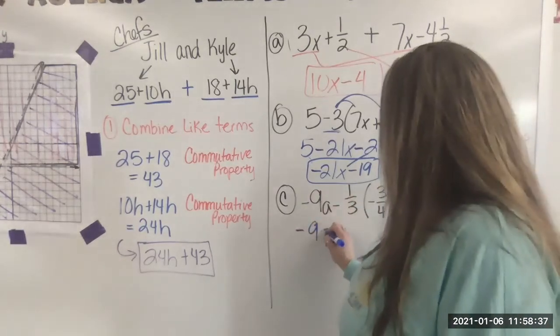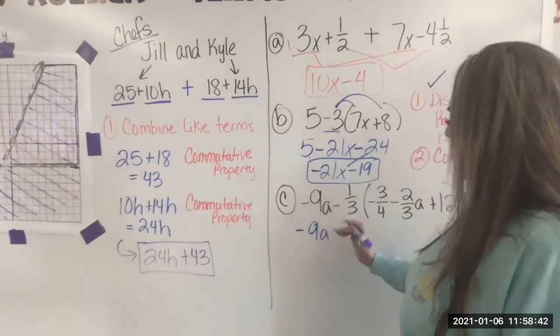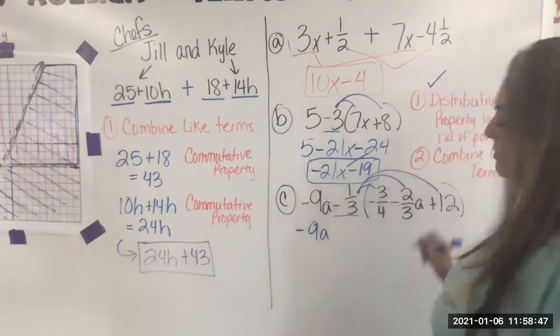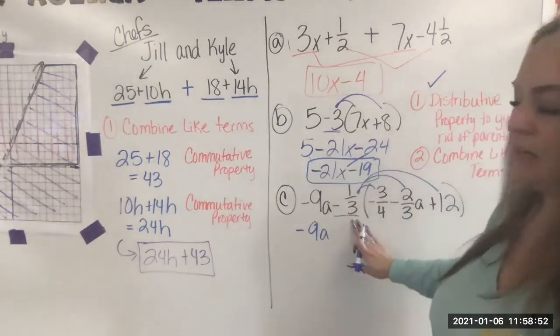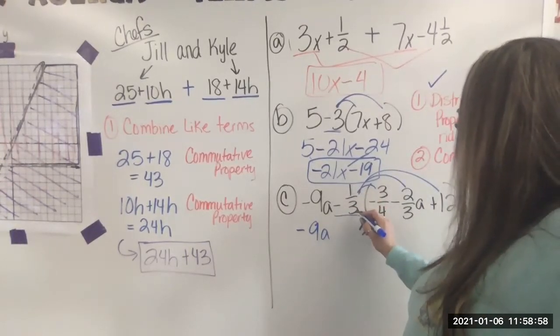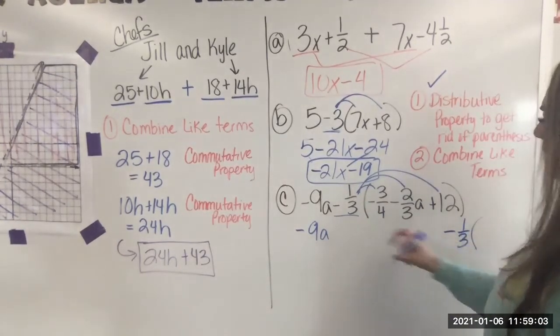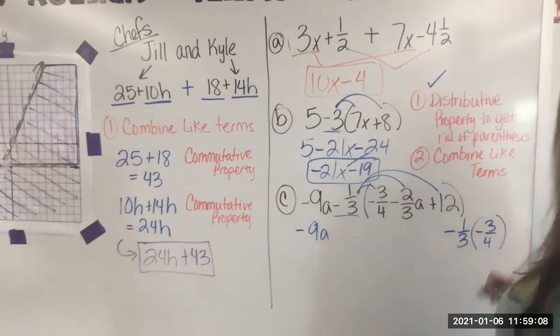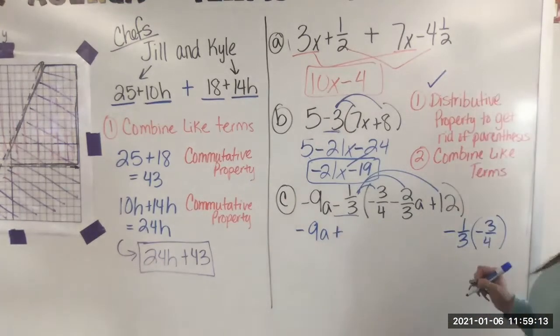This term stays the same. It's negative 9A. We're not doing anything with that yet. Then we have negative one third and we're going to distribute it to every term inside the parentheses. If those are grouped together, they're all being multiplied by the number outside of the parentheses. So we have negative one third. I'm going to write this to the side. Negative one third times negative three fourths. Well, automatically, I know my answer is going to be a positive because a negative times a negative is a positive. So I'm going to put that over here.